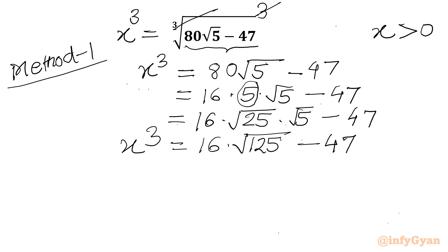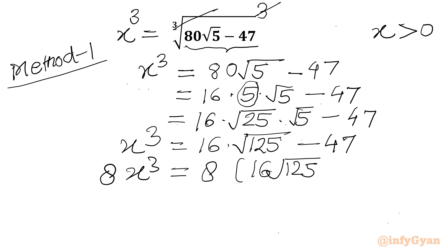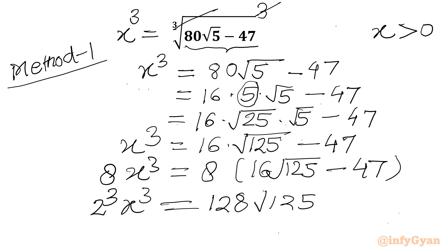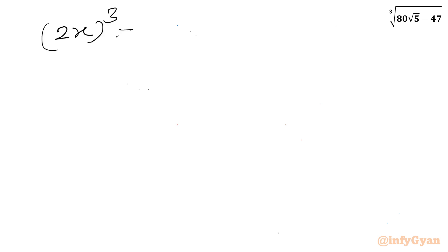Now I will multiply both sides by 8. So 8x³ = 8 × 16√125 − 47 × 8 = 128√125 − 376. We can recognize the left side as (2x)³, so we have (2x)³ = 128√125 − 376.